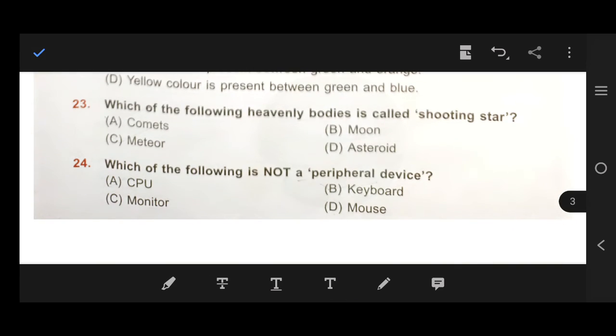Next, number 23, which of the following heavenly bodies is called shooting star? It's a meteor, number C, meteor. Next, number 24, which of the following is not a peripheral device? CPU. Because keyboard, monitor, mouse are peripheral devices, which devices connect with CPU.